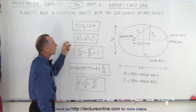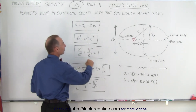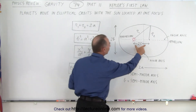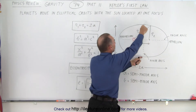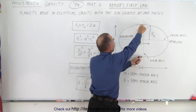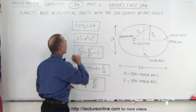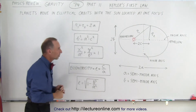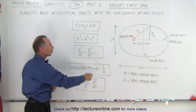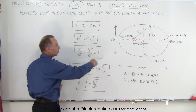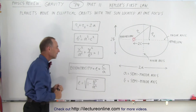Here we have the relationship between B, A, and C. 2C is the distance between the foci, 2B is this distance, and 2A is that distance, so B squared equals A squared minus C squared. We also have the equation of an ellipse, which always comes in handy.